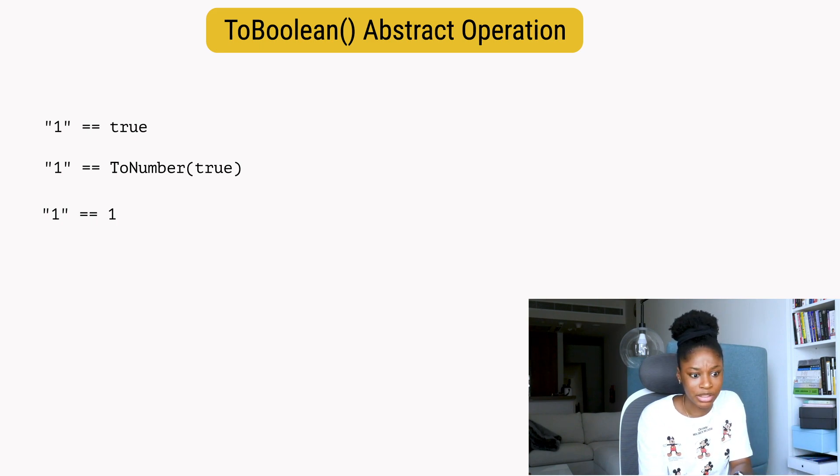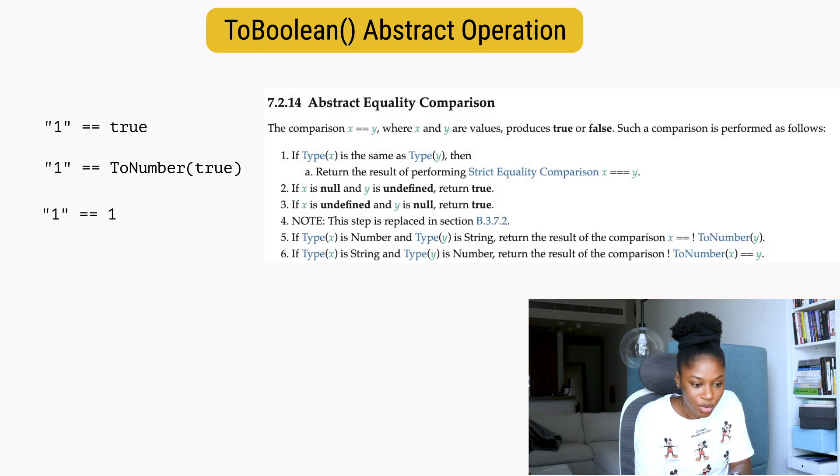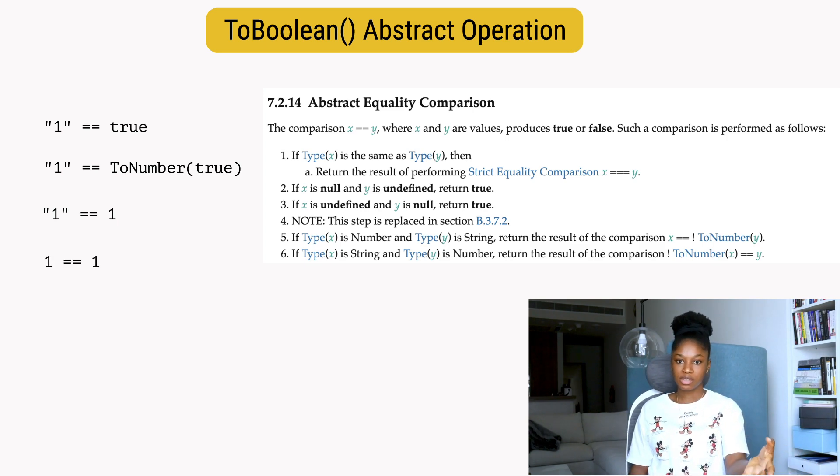I think number five: it says if type X is number and type Y is string, return the result of the comparison X == ToNumber(Y). It tries to convert the string to a number. In our case, the string will be converted to the number one, so the comparison ends up being one is equal to one, and we'll get true.